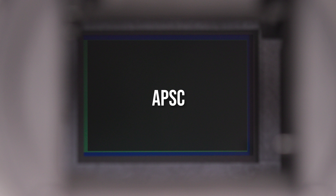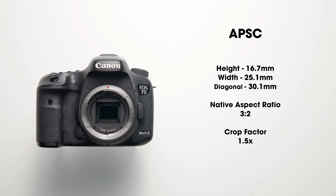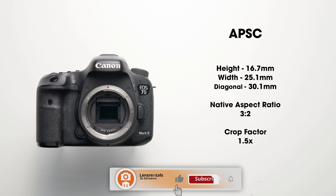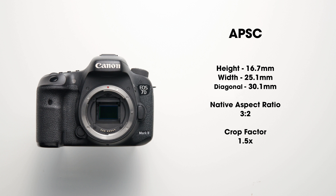The APS-C sensor size is mainly housed in small DSLRs and compact cameras. Generally, APS-C sensors are 25.1 by 16.7mm in size, with a native aspect ratio of 3x2 and a crop factor of 1.5.